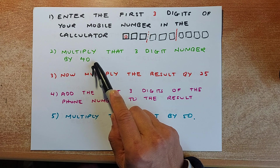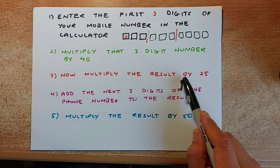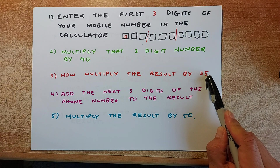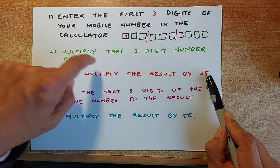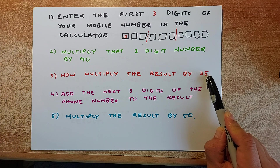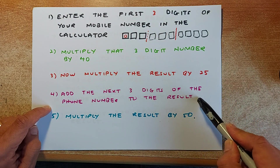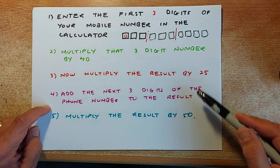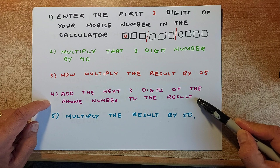Once you have done that, press the equals sign, then you are going to multiply the result by 25. So: enter the 3-digit number, multiply by 40, press equals, then multiply by 25, press equals and you have another number. Now the next step — you are going to add the next 3-digit number from your phone into the result. Make sure you write it down so you know what it is.